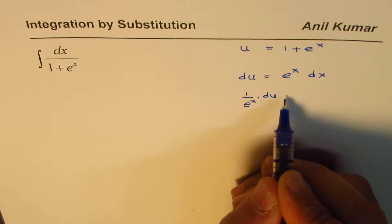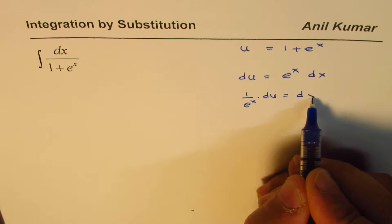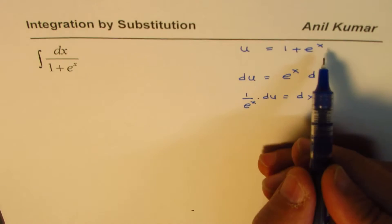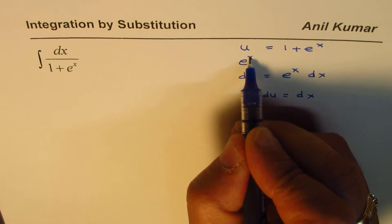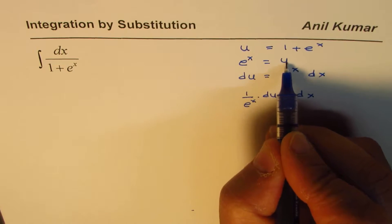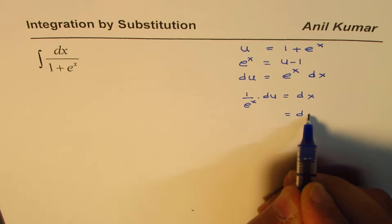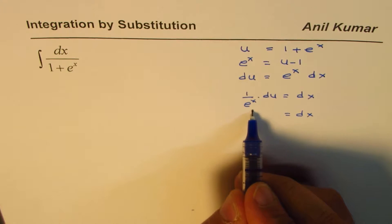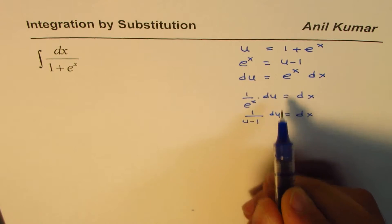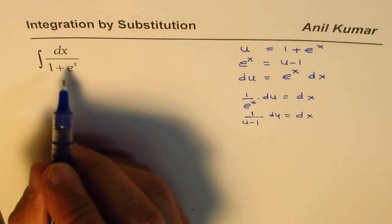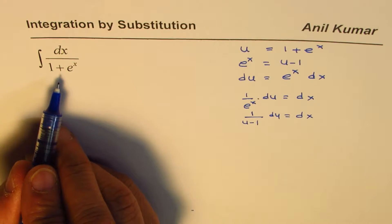So e to the power of x I can say is u minus 1. So I could write in this case dx as 1 over u minus 1 du. So I hope this substitution is clear. We'll use this substitution and rewrite this particular function.